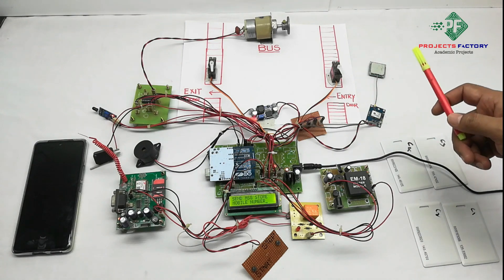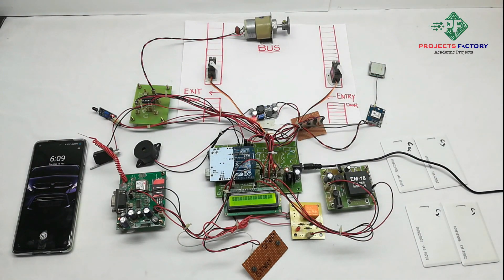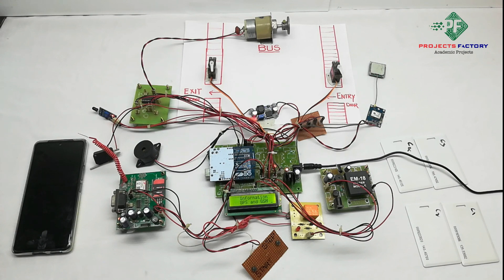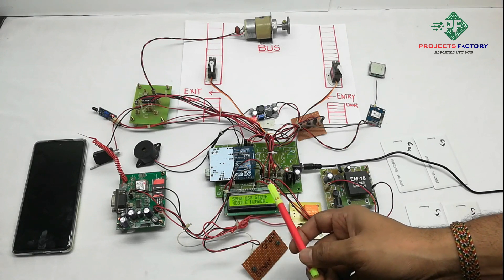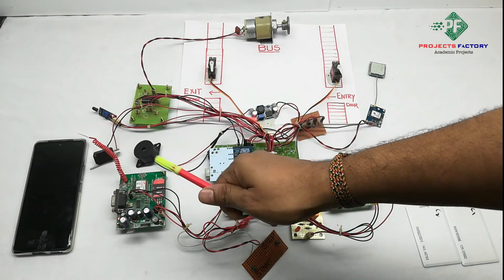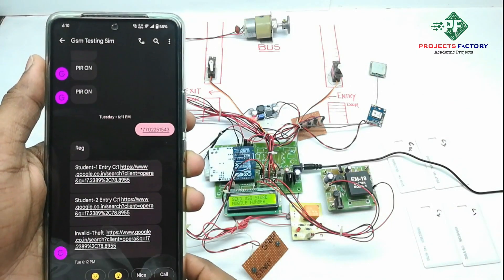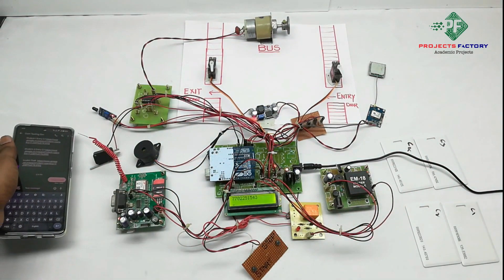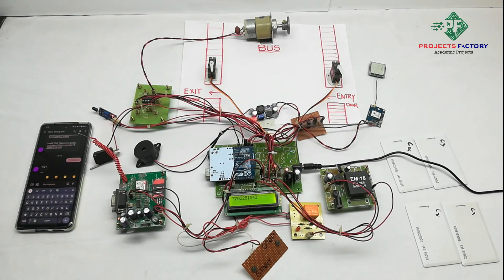Whenever we get the GPS signal, we can see the LED blinking on the GPS module. After that, the LCD shows a prompt to send a message to store the mobile number. We have to send the star mobile number SMS to the GSM modem. On the LCD it is showing latitude and longitude. After that, it again asks to send an SMS to store the mobile number, so we send the star mobile number SMS to the GSM modem again.